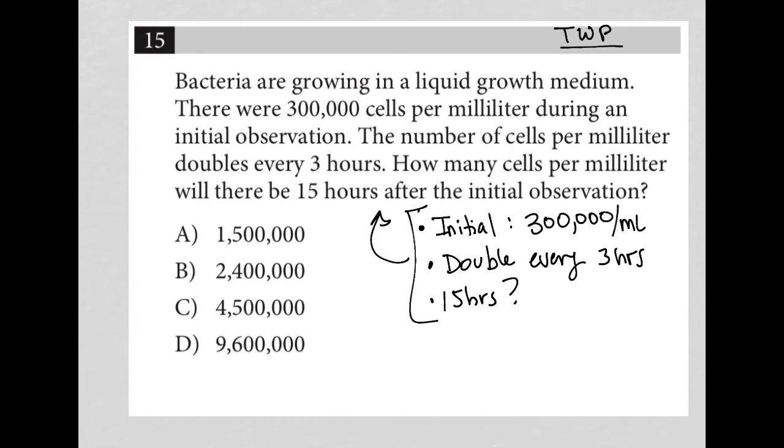I am going to make a progression here of what should I expect to happen. So, I'm starting off with 300,000. After three hours, I expect this to be 600,000. Why? Because the question tells me it doubles. After another three hours, it should be 1,200,000. Why? Again, because it doubles again.